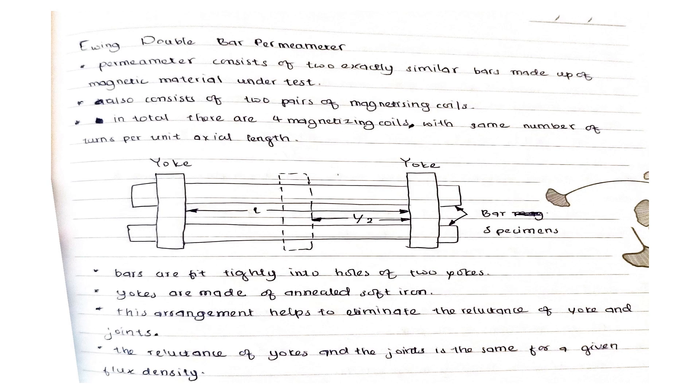Each bar is wound with two coils, one of full length and the other of half length. The bars fit tightly into holes of two yokes. The yokes are made of annealed soft iron. The position of these yokes and the bars can be adjusted. The arrangement of the bars is as shown in the figure.